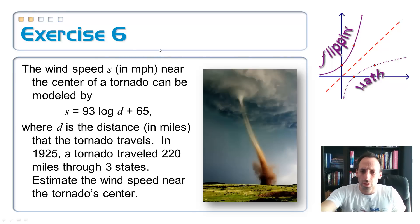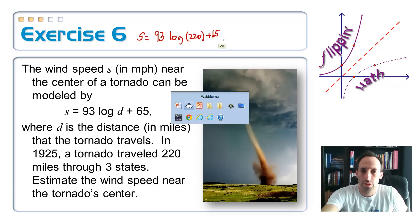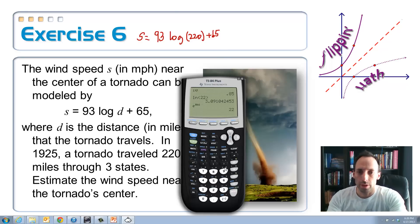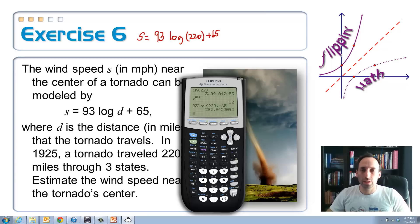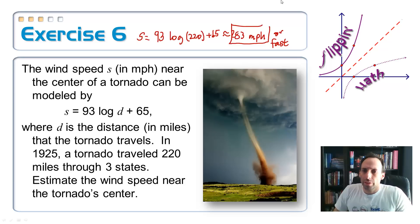And you might be shocked. It's pretty fast. So this means that the speed is equal to 93 times the log of, and it traveled for 220 miles, so 220 plus 65. So let's call that calculator back up, because there's no way you're going to do that in your head. All right, so 93 log, and inside the parentheses, 220, close them—it's essential that you close them there—plus 65, and we get 280, let's approximate that as 283 miles per hour, 283 mph, or fast. That's really fast. I'm not sure I've ever done that fast. Maybe in a plane.